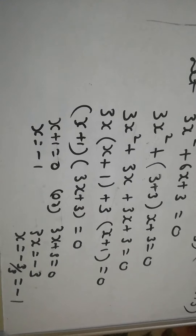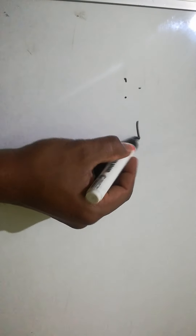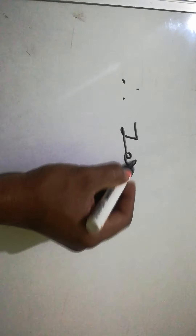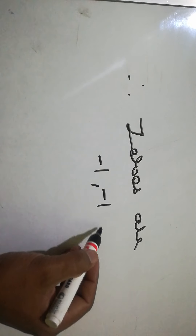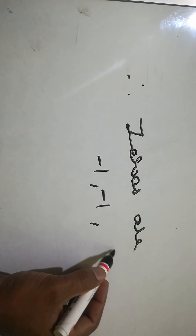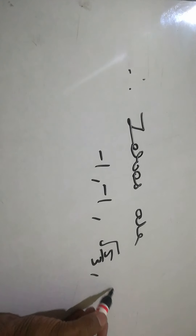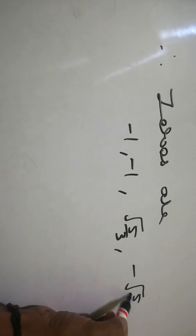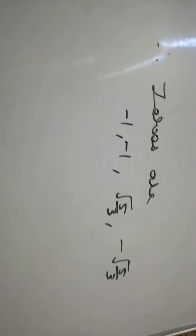Therefore, the zeros of the polynomial are x = -1 (repeated), and the given zeros x = √(5/3) and x = -√(5/3).